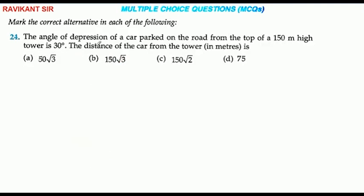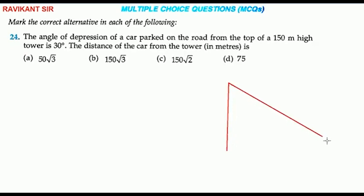The angle of depression of a car parked on the road from the top of a 150 meter high tower is 30 degrees. The distance of the car from the tower is to be determined. If you look at a 150 meter high tower, the angle of depression of a car is 30 degrees.